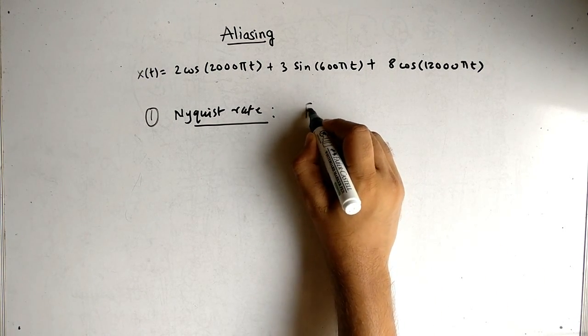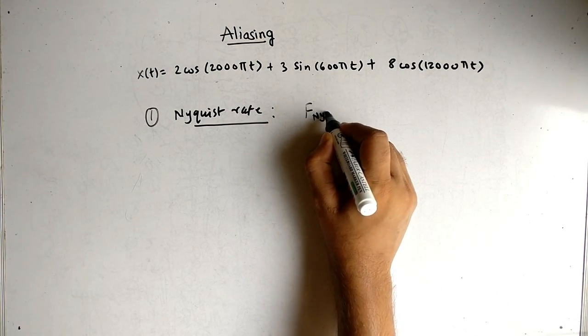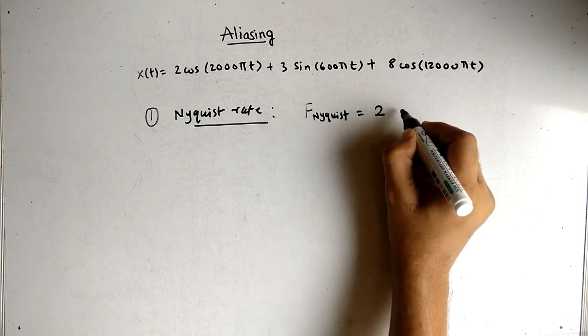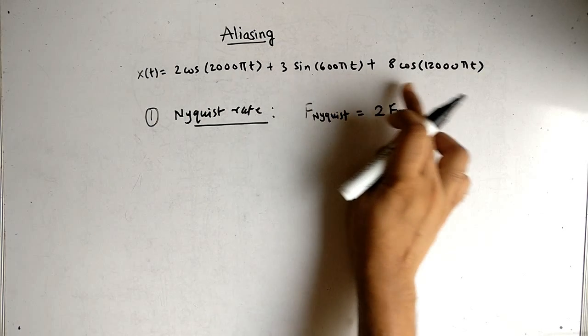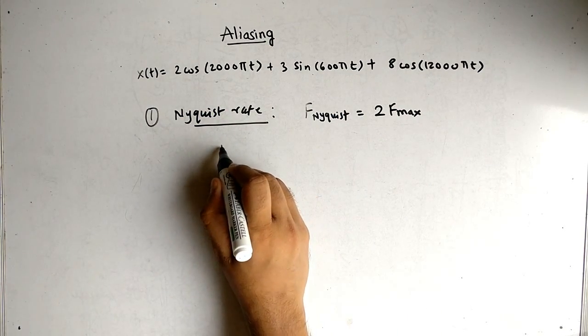Nyquist rate is represented as f_Nyquist and that is equal to twice the maximum frequency, f_max. So we have to find the maximum frequency of the equation.